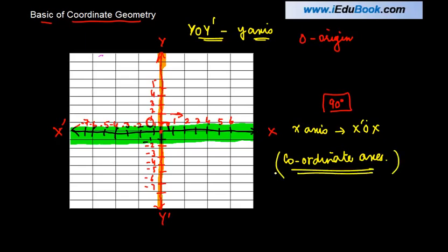Let us understand some more terms around coordinate geometry. Now let's say you have any point - let's call this point as A - and you draw a perpendicular from A to the x-axis, and you draw a perpendicular from point A to the y-axis.